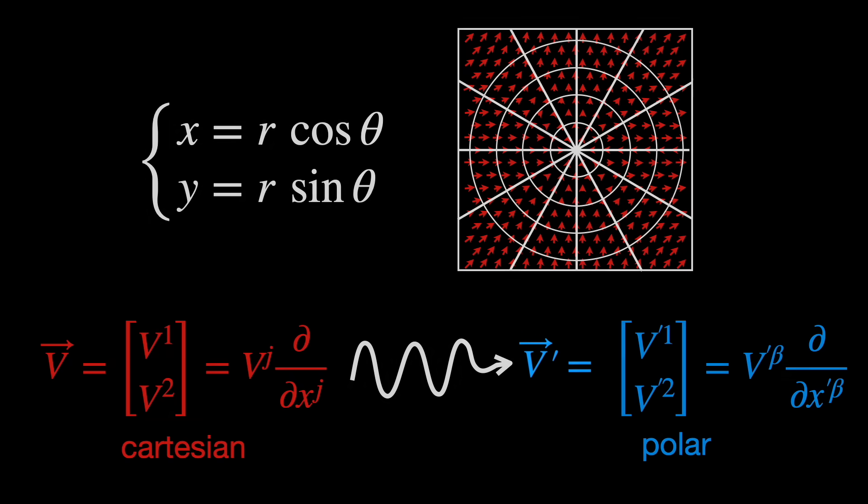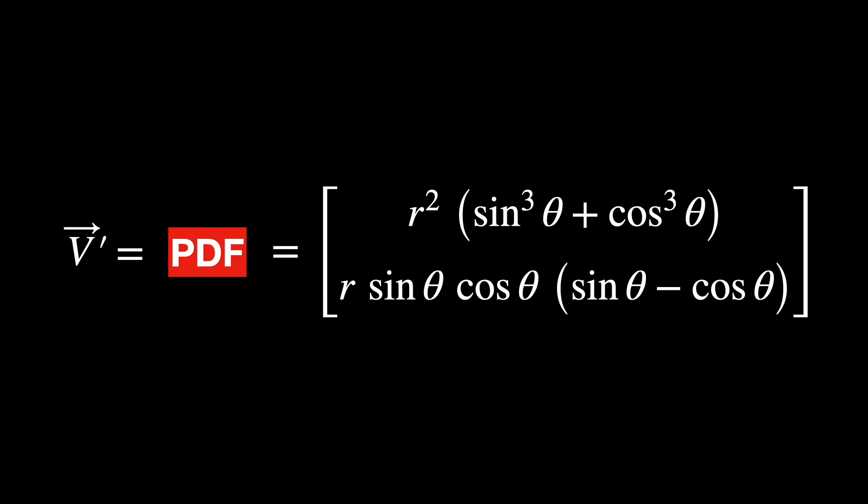And as we know from linear algebra, when we change coordinates, both the components and the basis vectors transform. After expressing the Cartesian basis in terms of polar bases, we can finally write the vector entirely in polar coordinates.